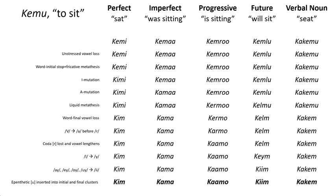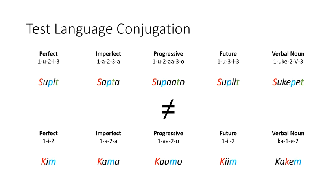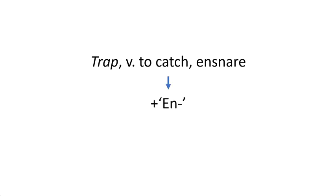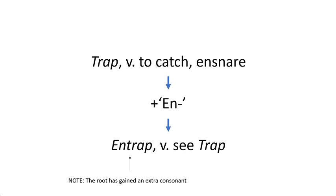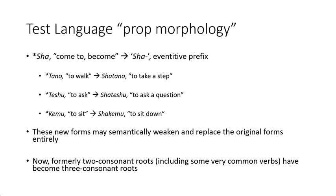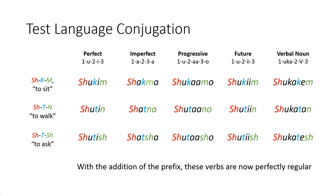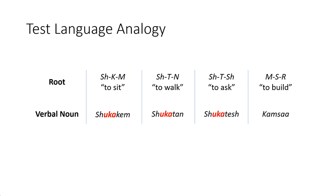One pretty obvious thing that will need to be taken care of is the fact that this system only works with roots that have exactly three consonants. If the triconsonantal root system is perceived as the regular pattern, then speakers may go out of their way to make sure words can fit into it. One way this might be done is through appending words with extra morphology. In English, we have the verb 'trap', to which we can add the prefix N to make a word that means pretty much exactly the same thing. A similar process could be used to add an extra consonant to any two-consonant stems to make them fit with the triconsonantal system. And if this affix begins with a fricative, then the K-infix will apply, and if this strategy is used for all old two-syllable roots, then the infix will be quite common, so much so that words that don't use the infix may be considered irregular.